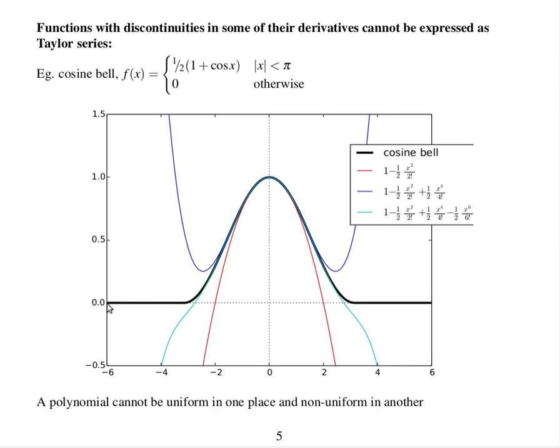So for example, this cosine bell function, which is this cosine function for magnitude of x less than pi and 0 otherwise. It can be expressed as a Taylor series in this part here, where all the derivatives are continuous. But out here, it can't. Because a polynomial can't be uniform in one place and non-uniform in another.